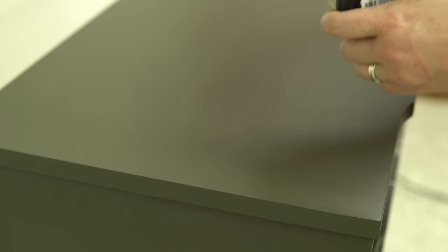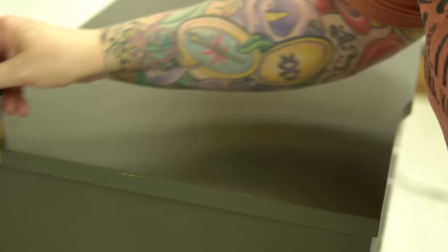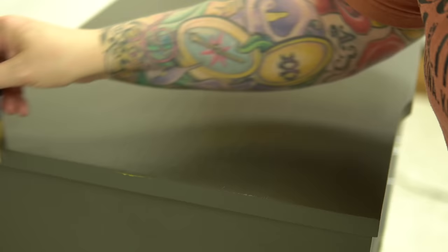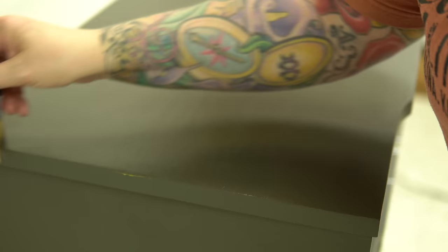Once everything was done, I used Fusion Mineral Paint Beeswax Hemp Oil. Fusion actually has its own top coat. You don't have to do this, but I love using this particular product because it deepens the color and it also adds just a little extra protection.